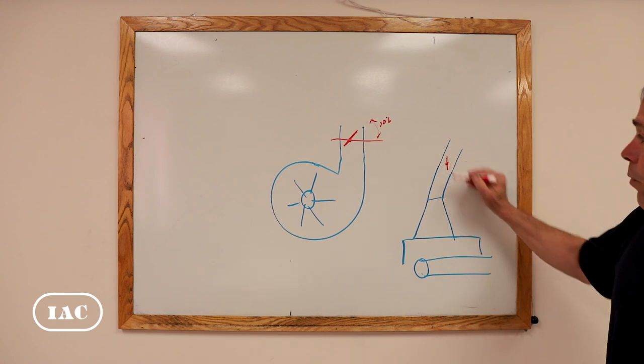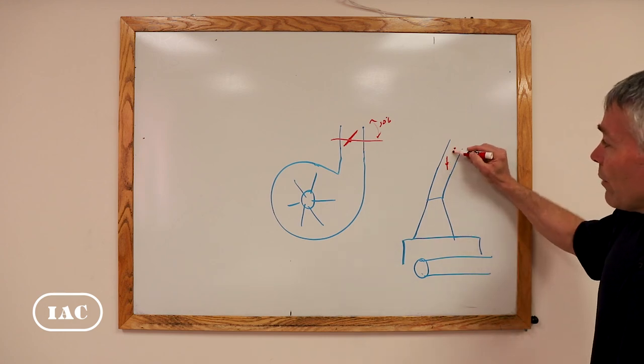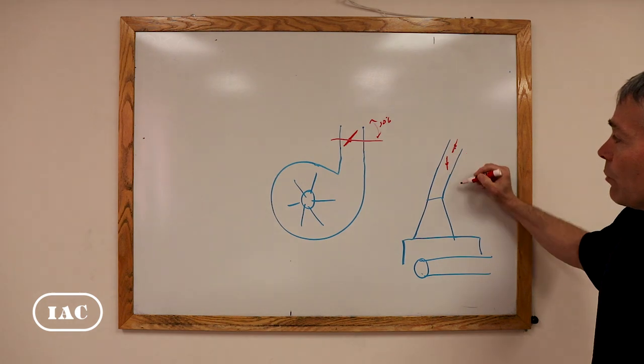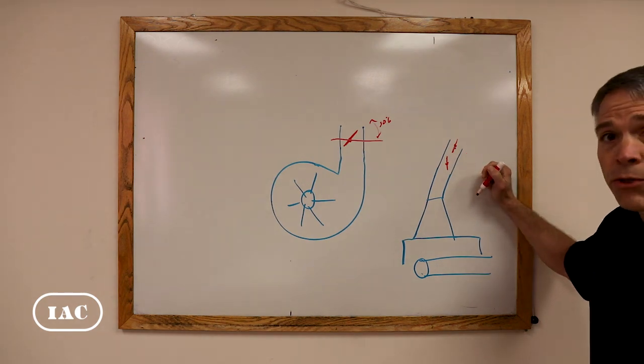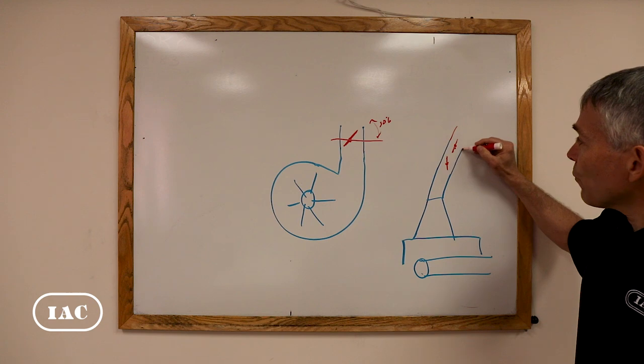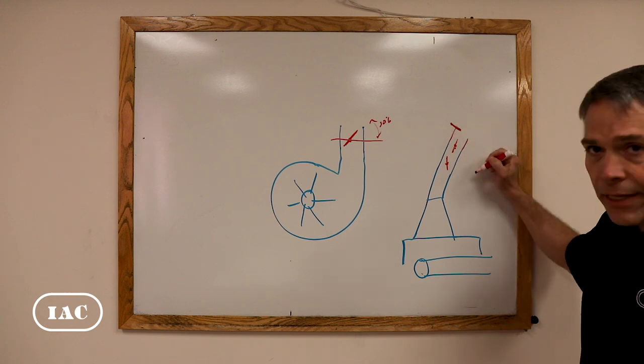In here, one of the disadvantages about butterfly dampers is that when it's completely open in this position, you think that there's no restriction to flow when in fact there is. So, a lot of times for ductwork, we recommend guillotine dampers.